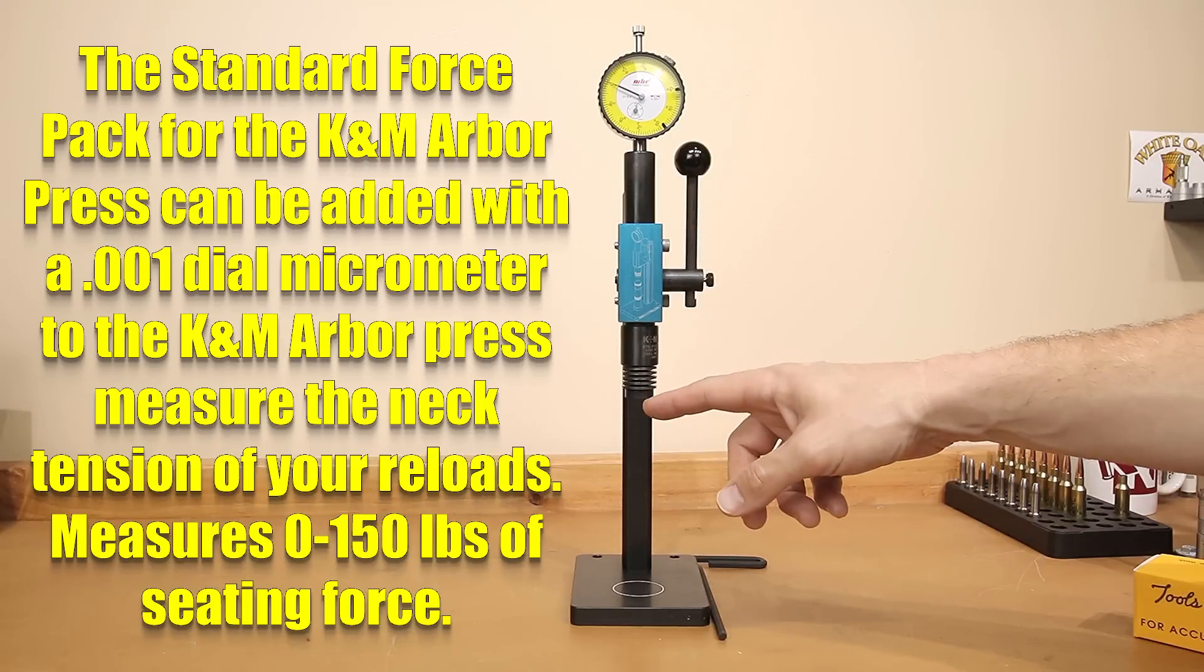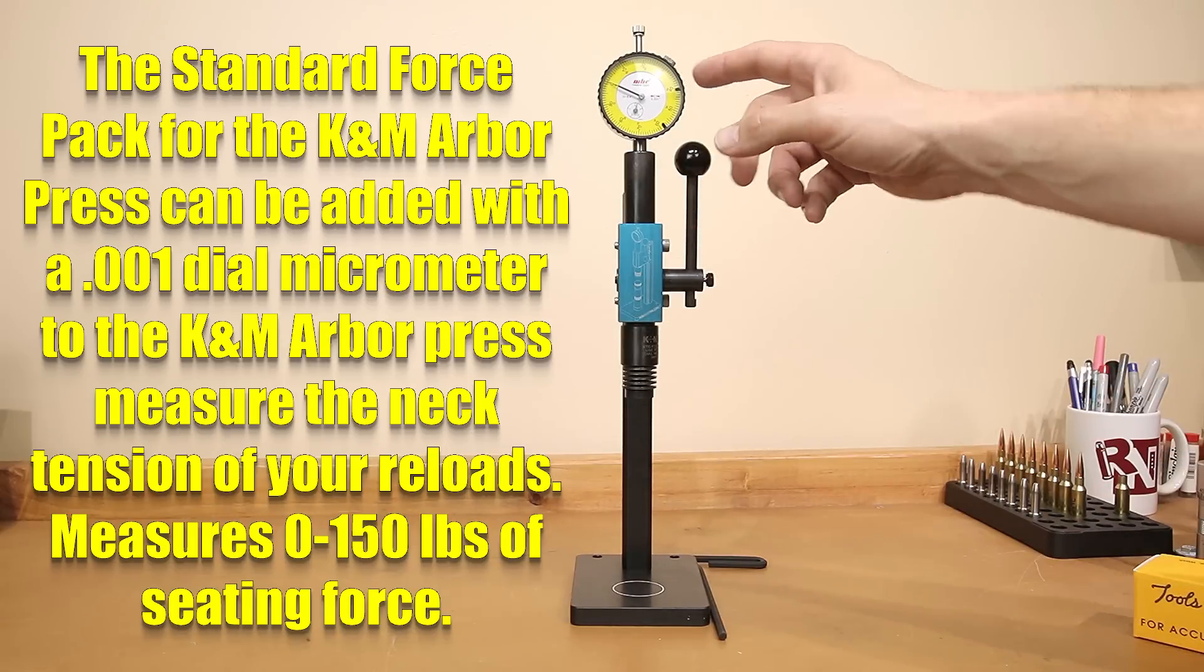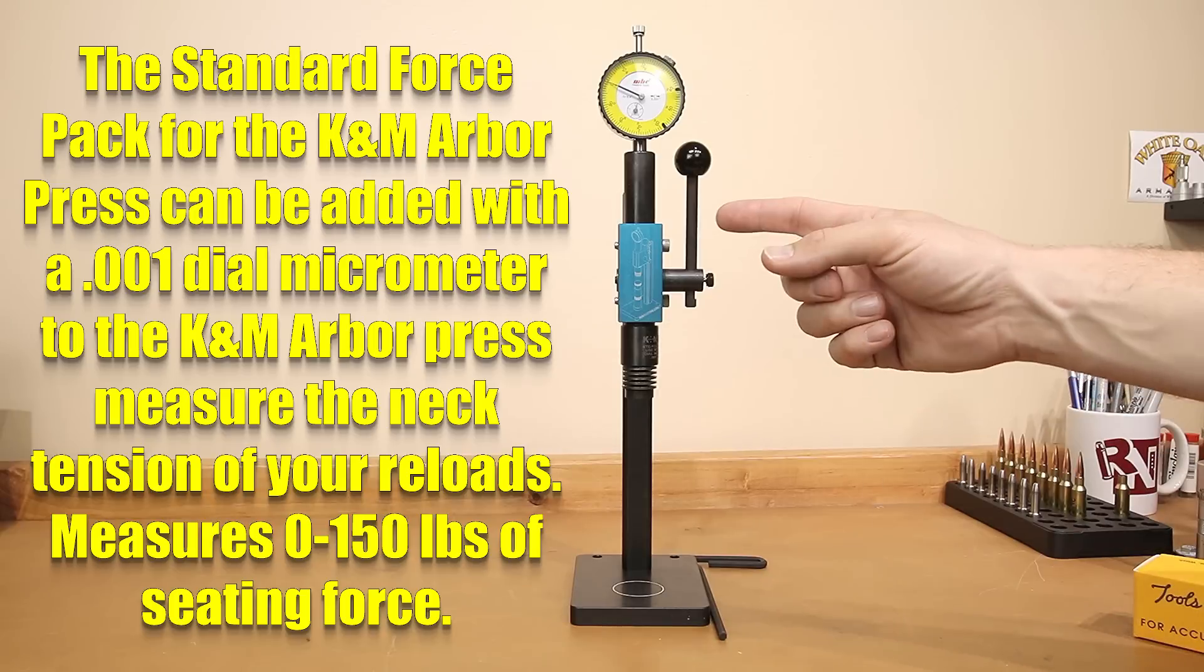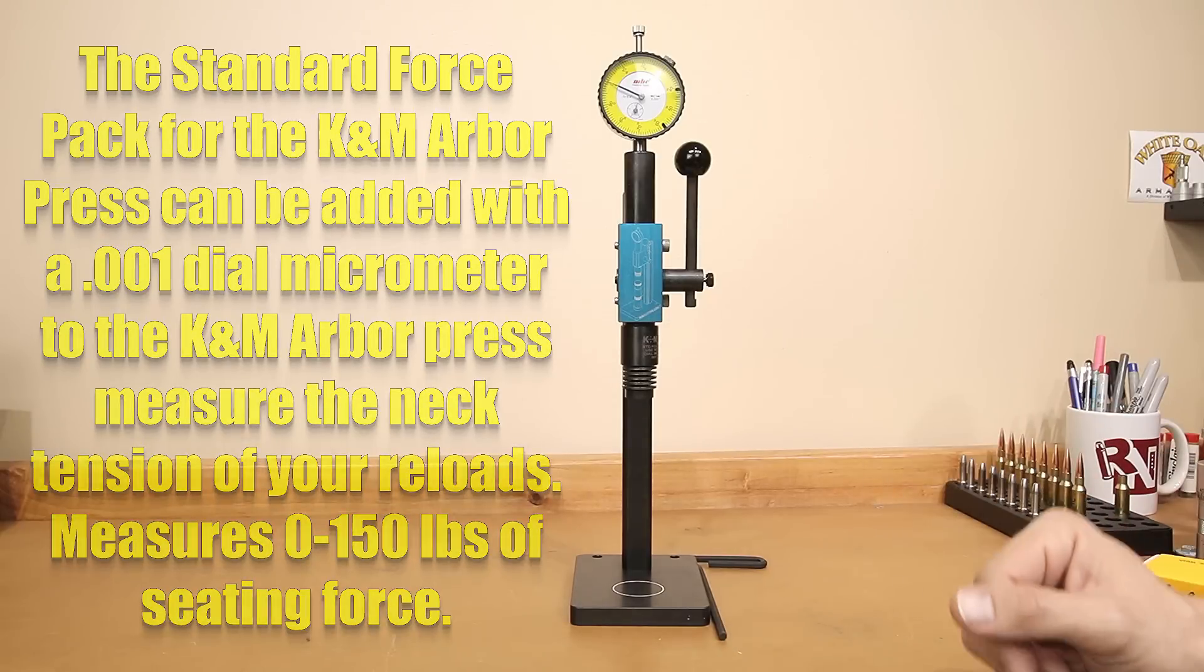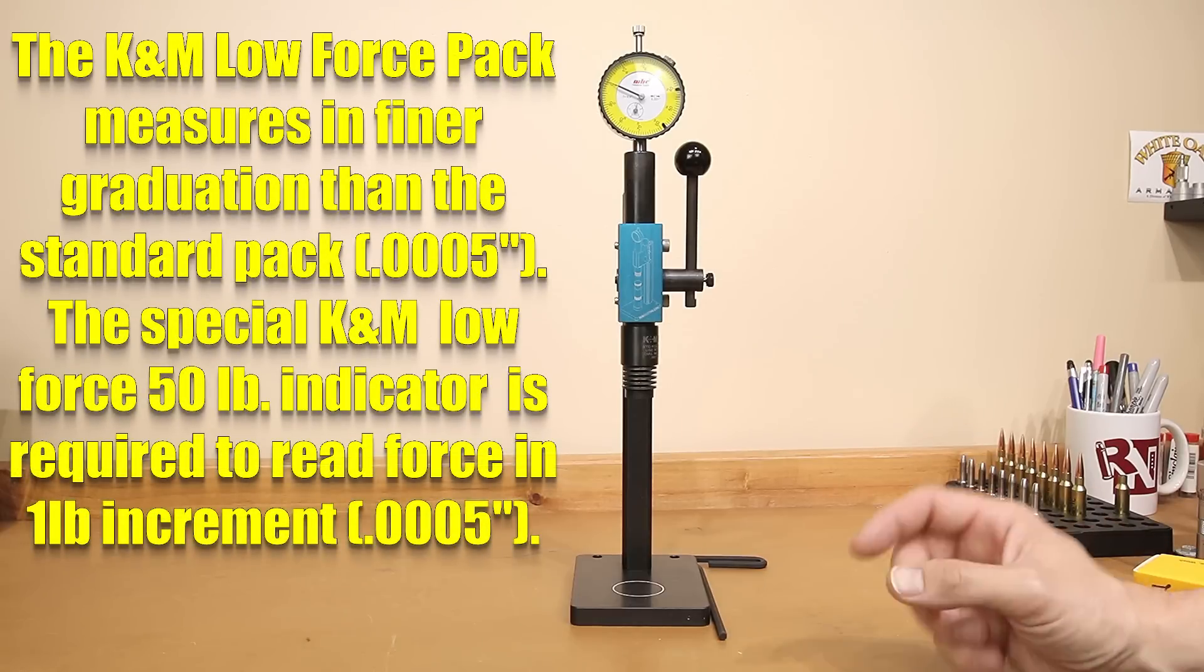In addition to the press and the force pack, you'll also need to buy the indicator which is sold separately. For every one thousandths of travel is equal to one pound of force. The low force pack option, if you're interested in, is a much finer graduation. It measures from anywhere from zero to 50 pounds of seating force.